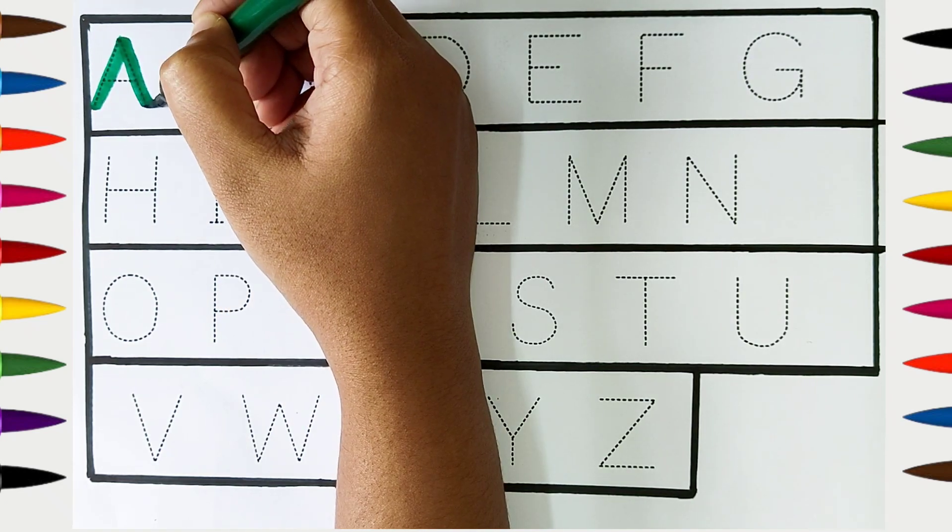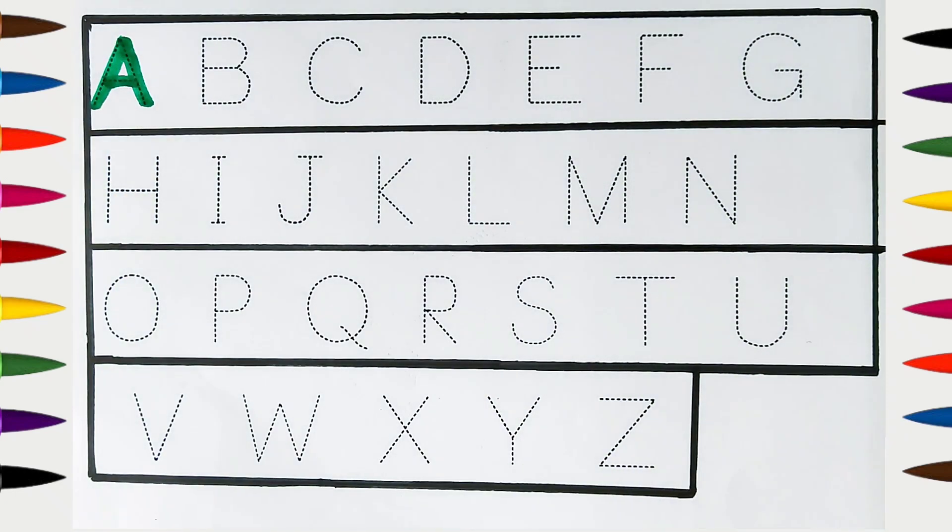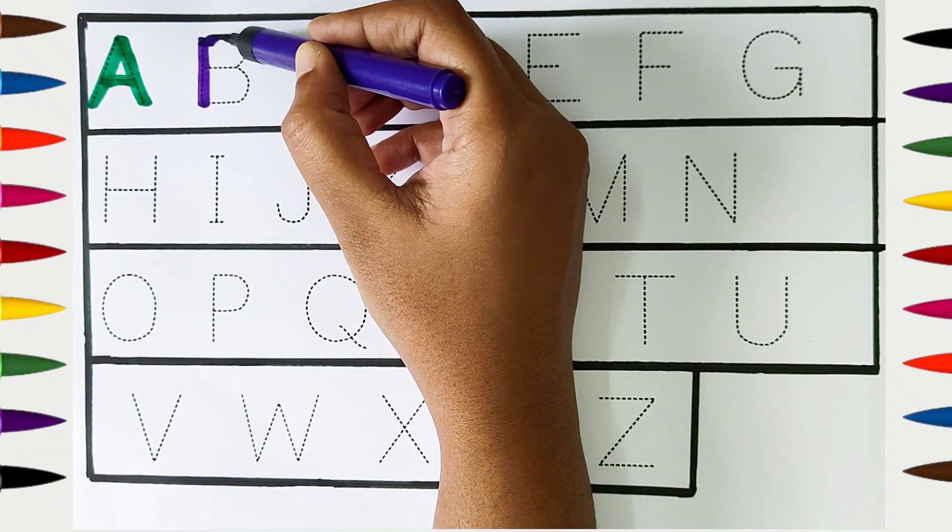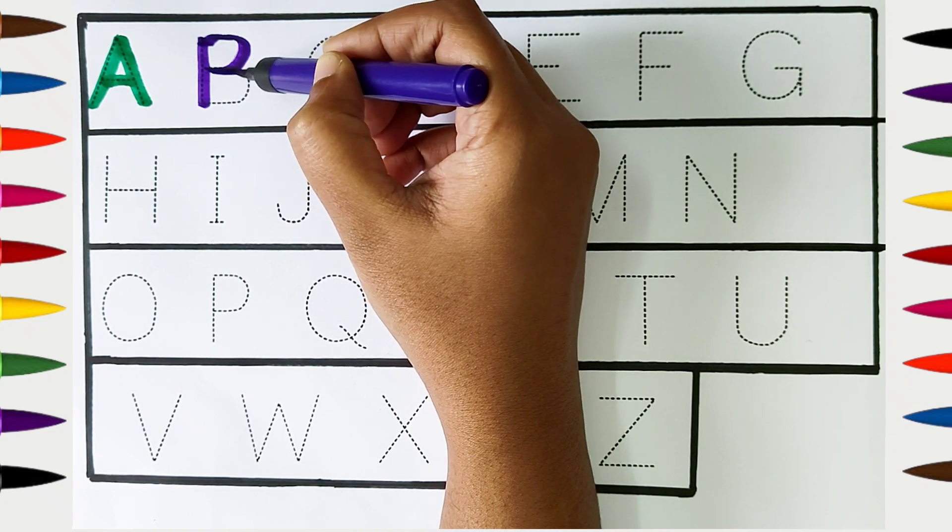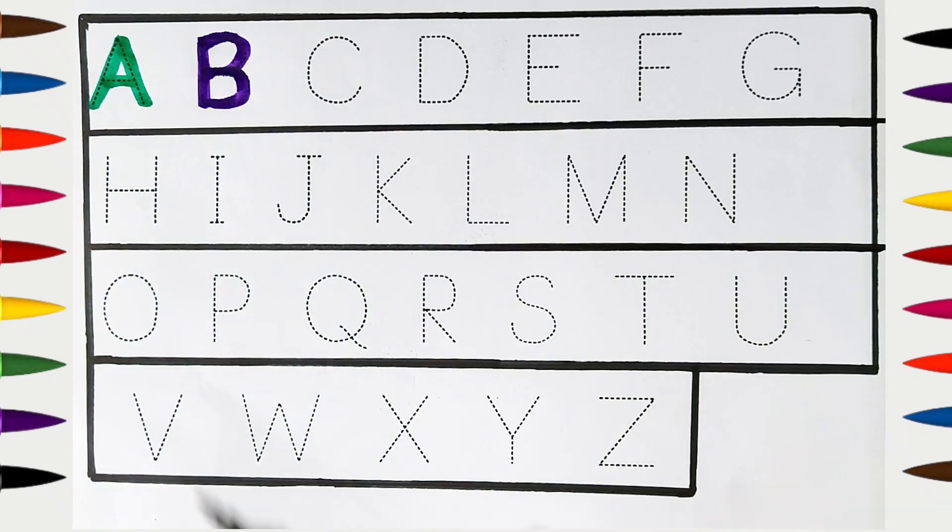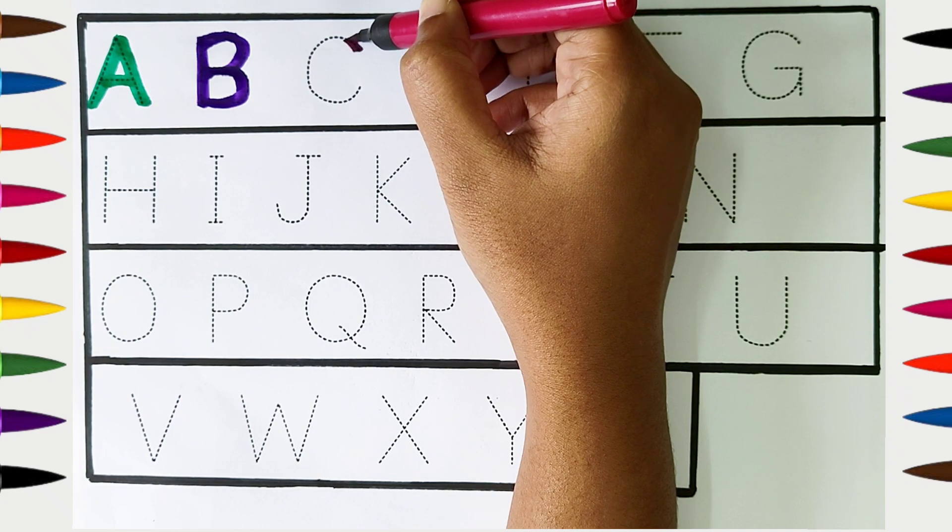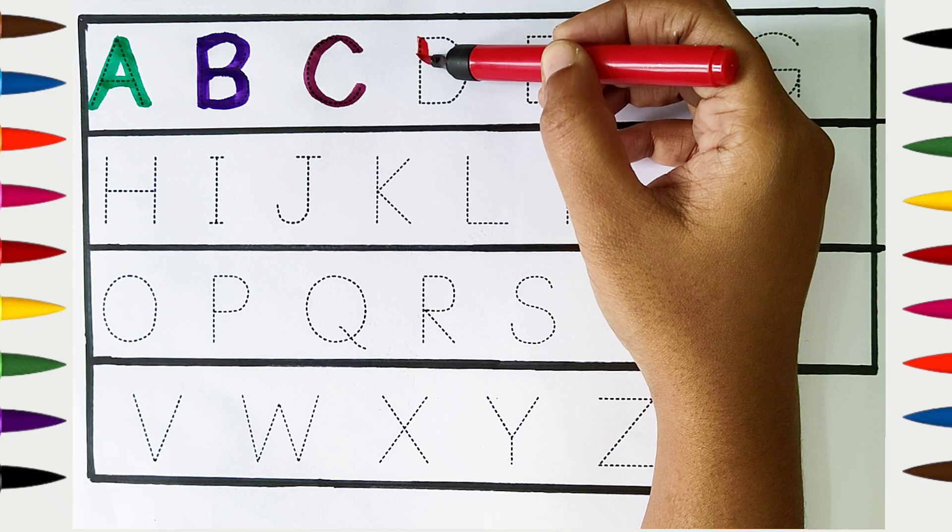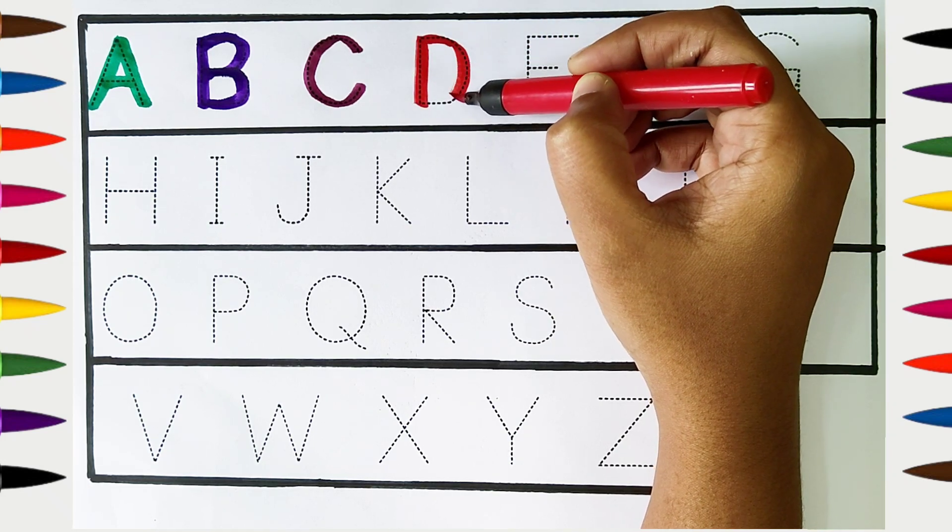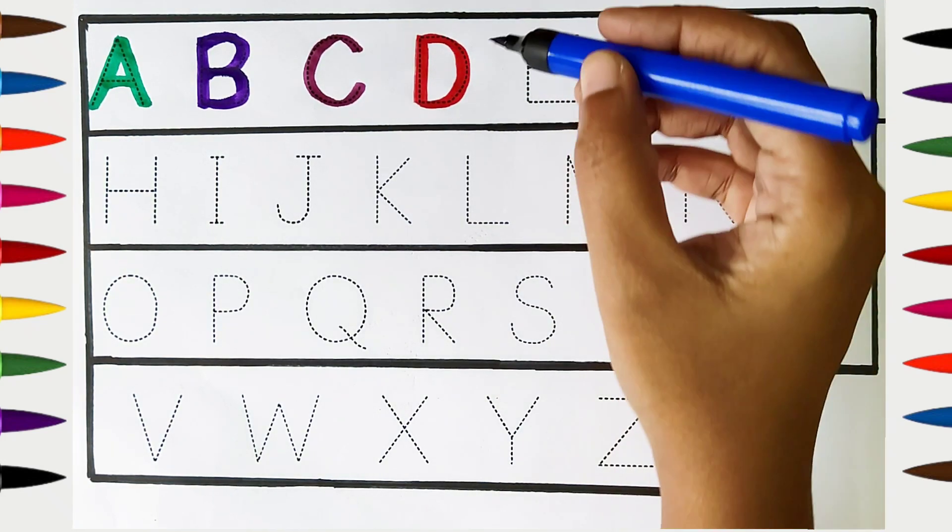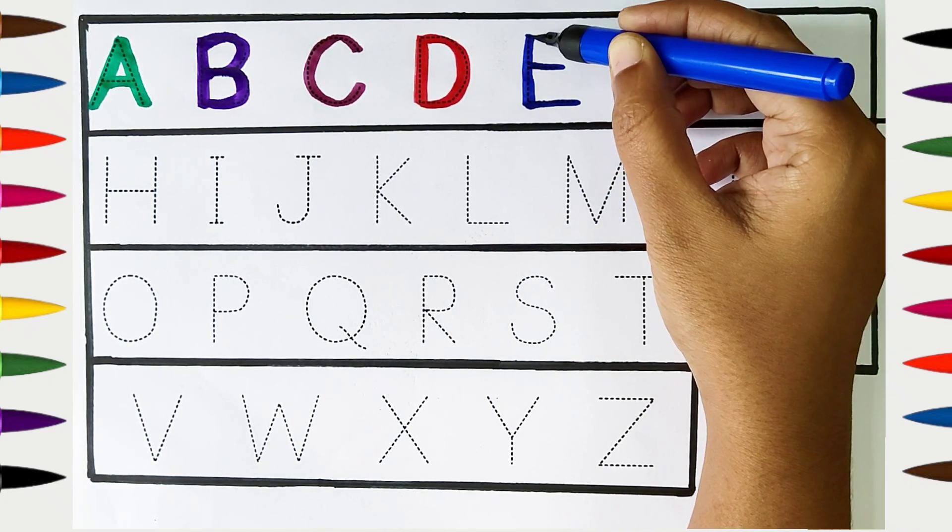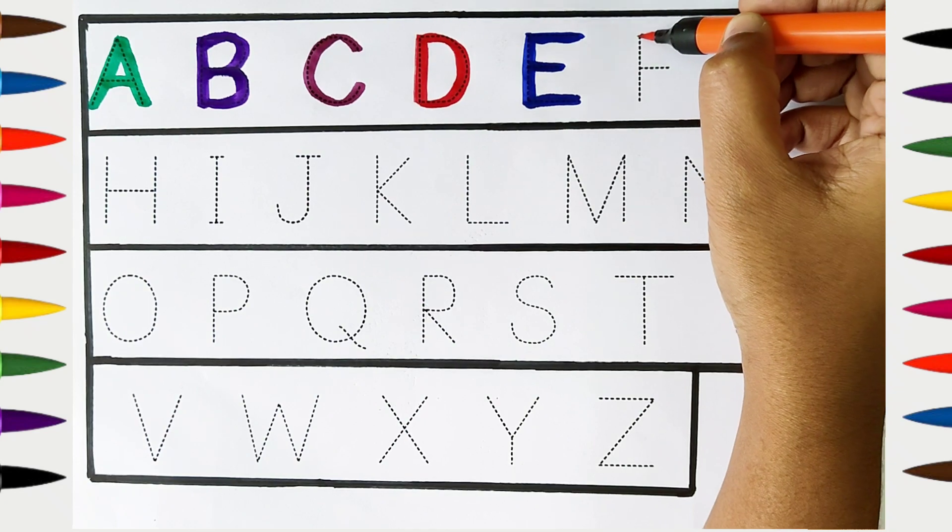A, dark green color. A is for apple. B, violet color. B is for ball. C, dark pink color. C is for cat. D, red color. D is for dog. E, dark blue color. E is for egg.